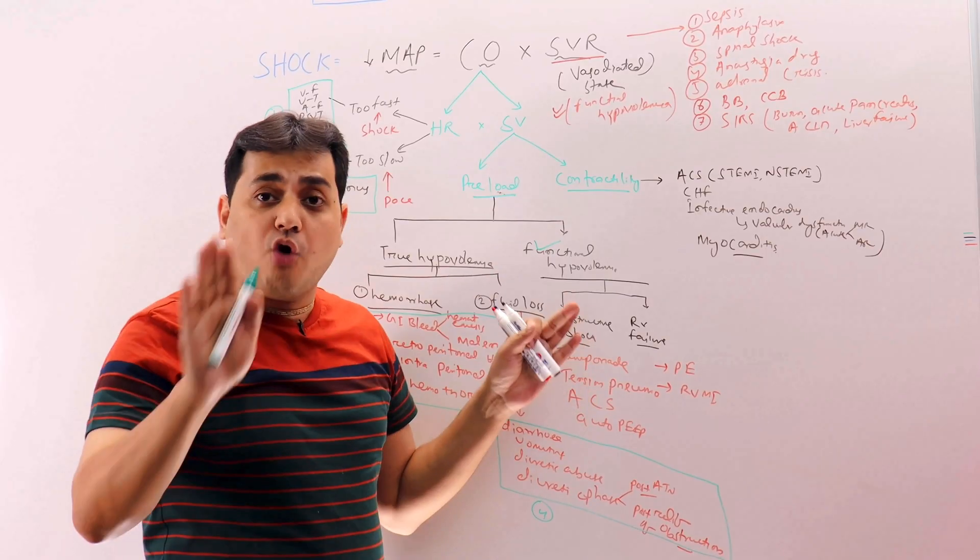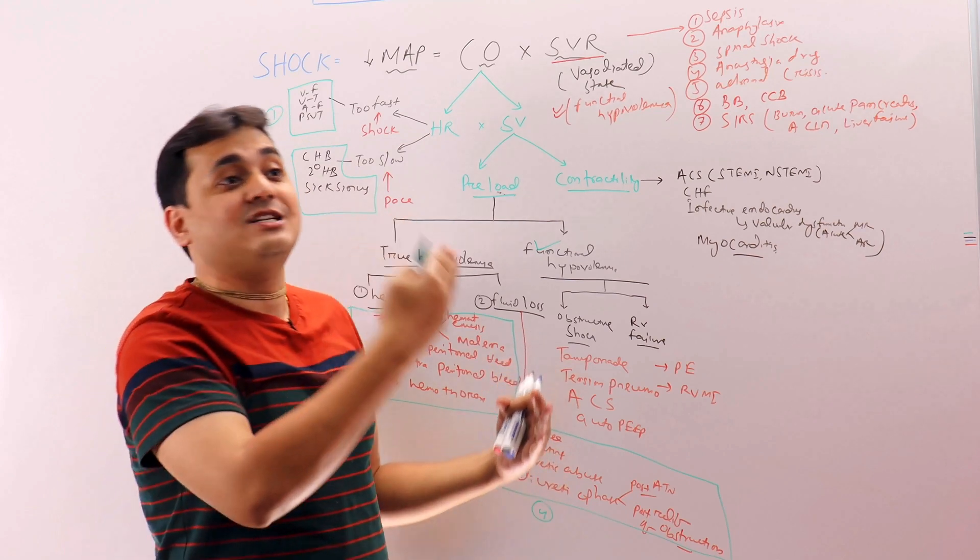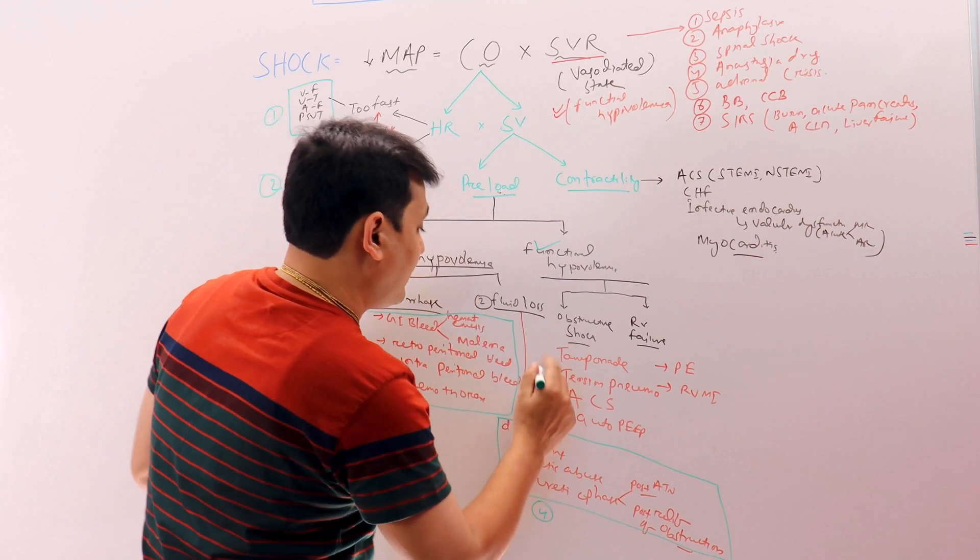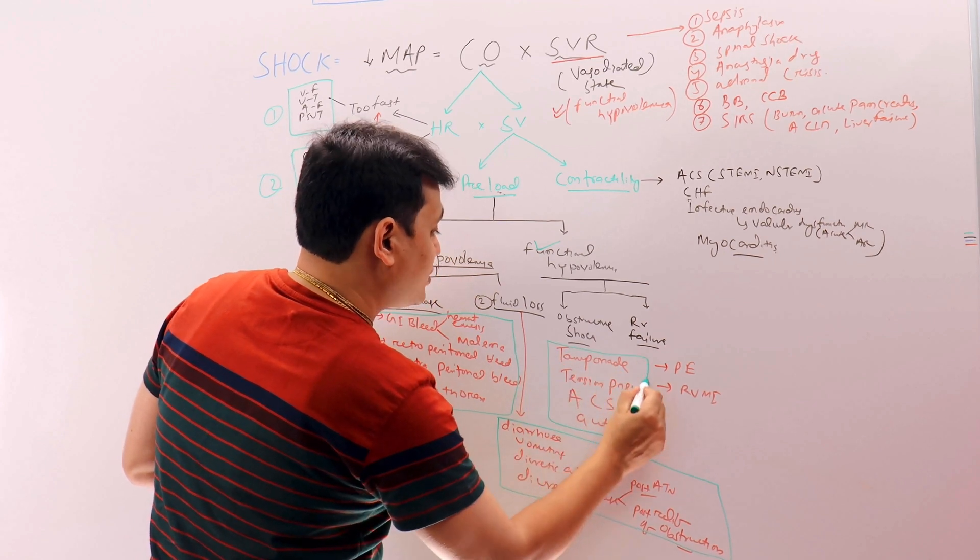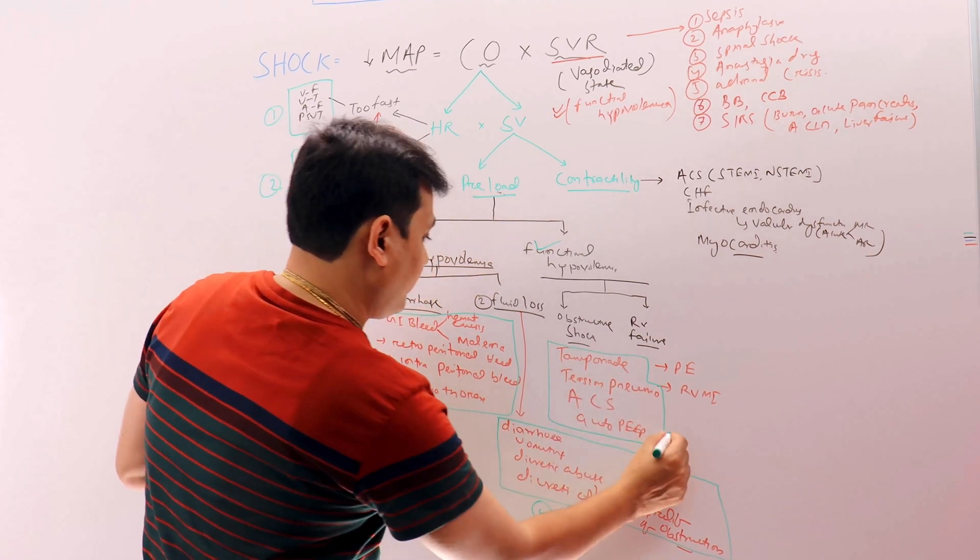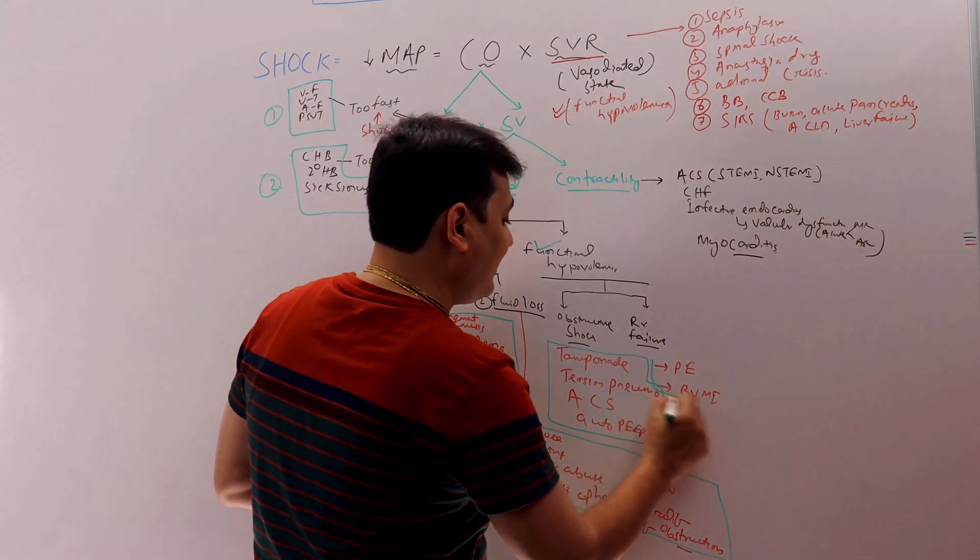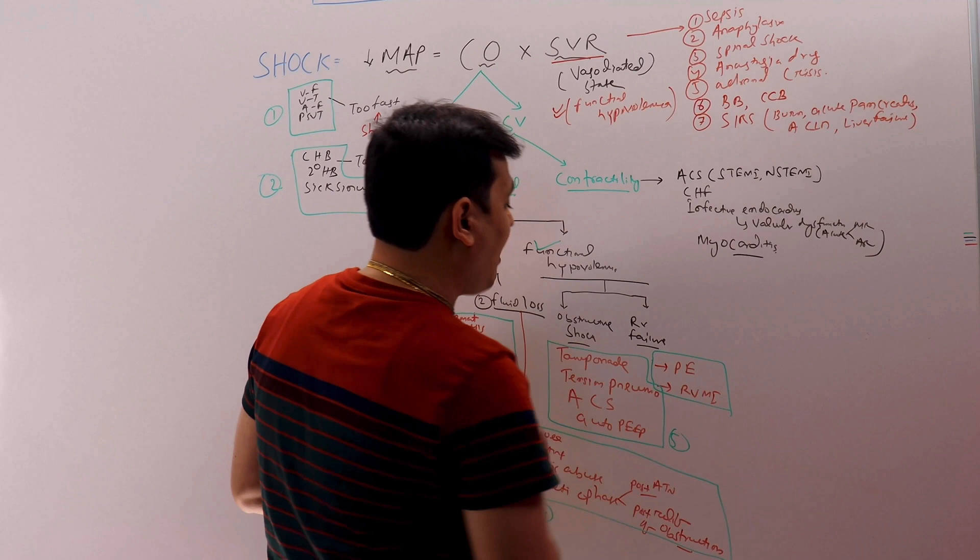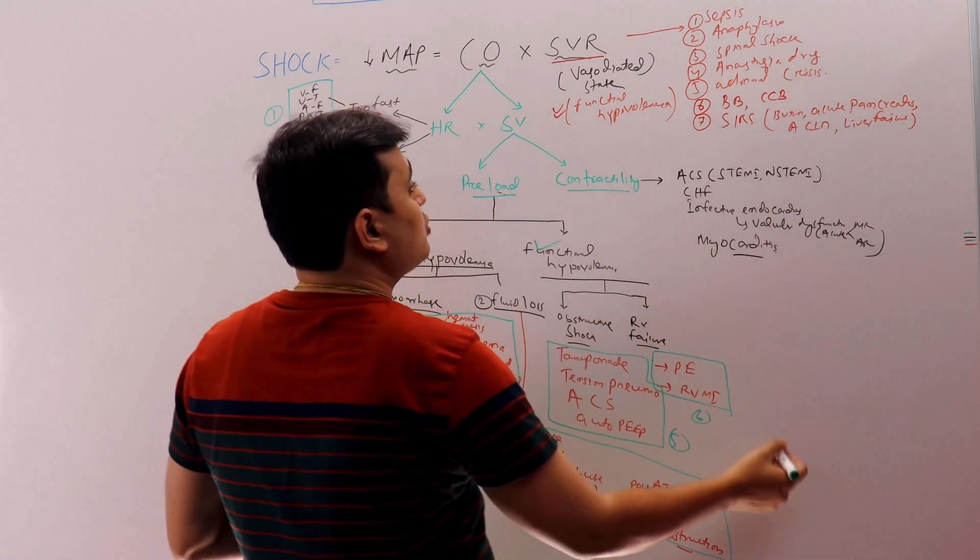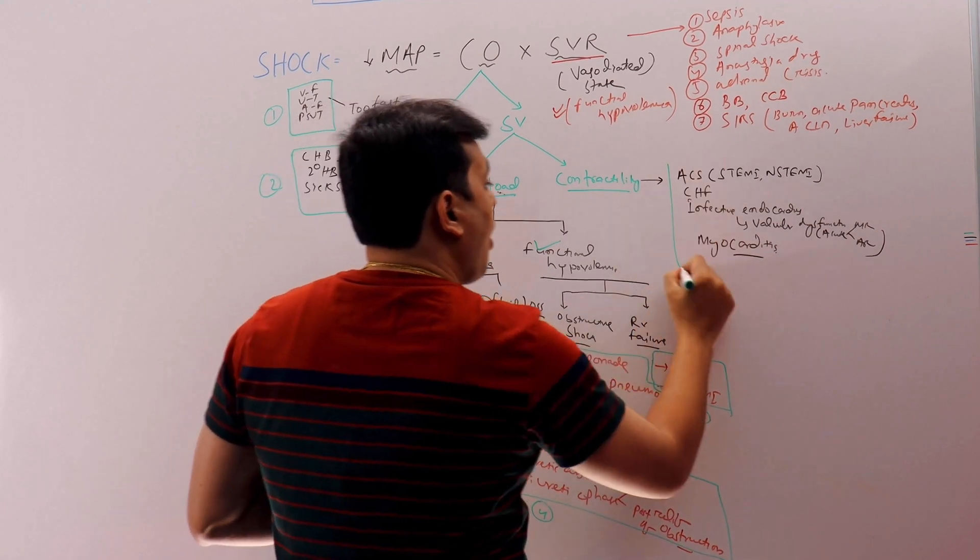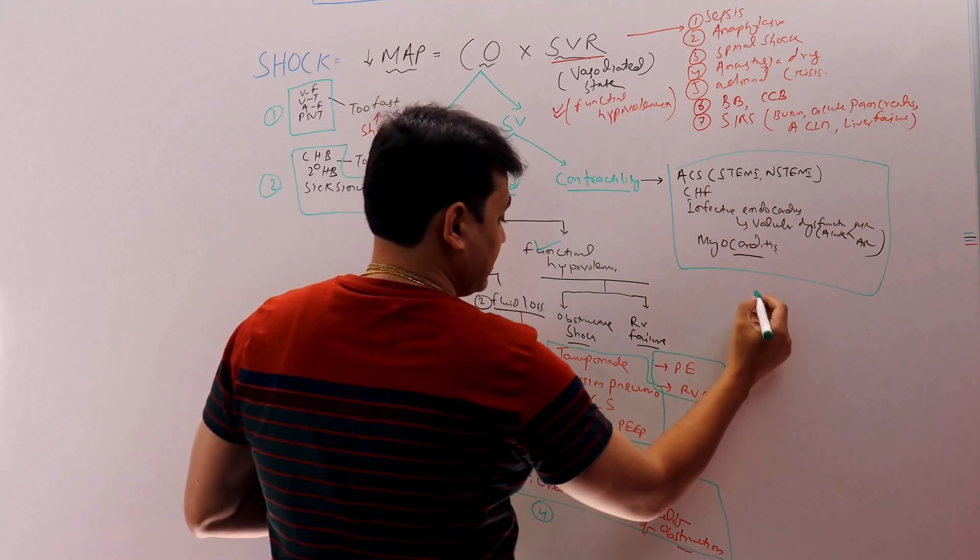And here fluid loss will also have history - patient who is having diarrhea, vomiting, or patient is having diuretics, or patient had recently acute tubular necrosis, or there is prostatic enlargement producing obstruction and now you catheterized so there is post-obstruction diuresis. All these things can produce a decline in MAP. Obstructive shock - this functional hypovolemia - why functional? The volume remains the same inside the body but because of increasing intrathoracic pressure it cannot reach the right side of the heart. So this obstructive shock we have: tamponade, tension pneumothorax, abdominal compartment syndrome, or auto PEEP. Of course RV failure can be there due to acute PE or RV wall myocardial infarction. Then you can have a contractility problem which can be produced by the acute coronary syndrome or congestive heart failure, infective endocarditis, myocarditis.